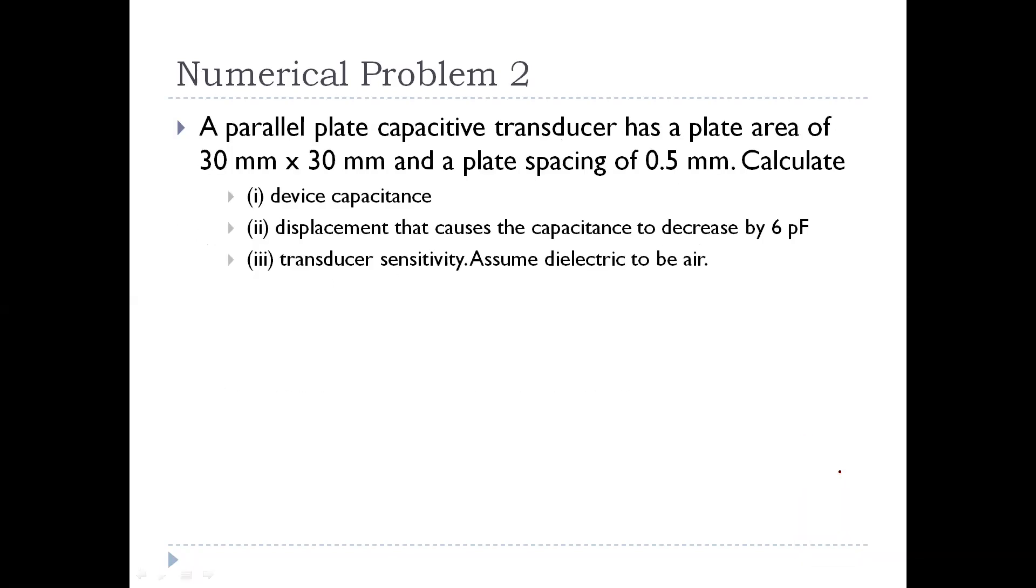A parallel plate capacitive transducer has a plate area of 30 mm x 30 mm and a plate spacing of 0.5 mm. Calculate device capacitance. The capacitance formula is epsilon r, epsilon 0, A by D.